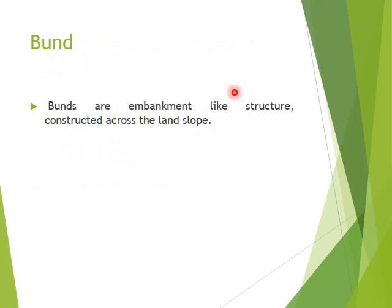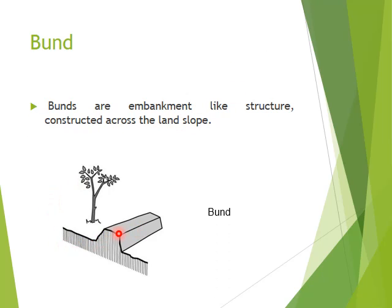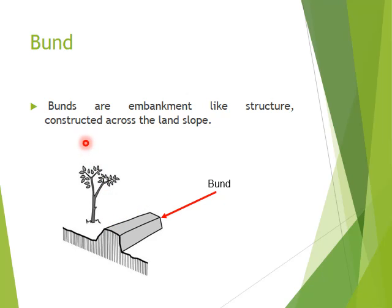A bund is an embankment-like structure. As you can see here, there is an embankment-like structure, and it is constructed across the land slope. If the land slope is going in one direction, I am constructing across it, so that when water flows along the slope, the bund constructed across the slope will be controlling soil erosion as well as conserving the water.